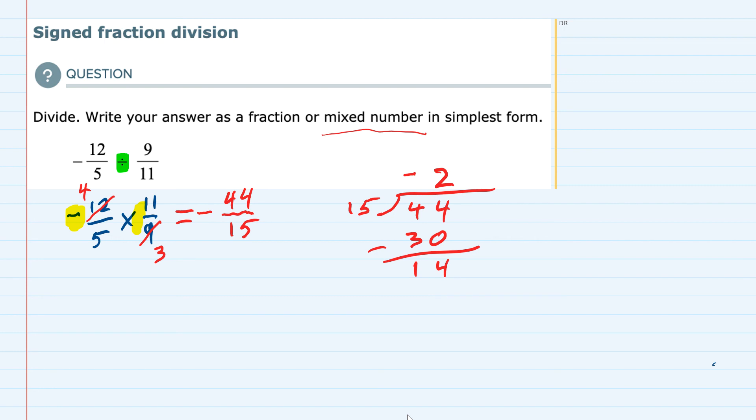We write that remainder in the numerator and bring the 15 to the denominator. Our answer is negative 2 and 14 fifteenths.